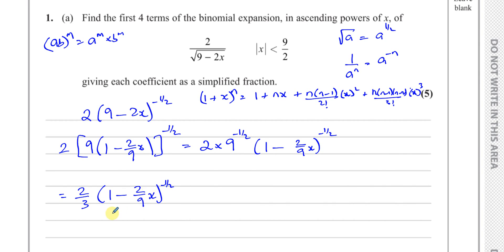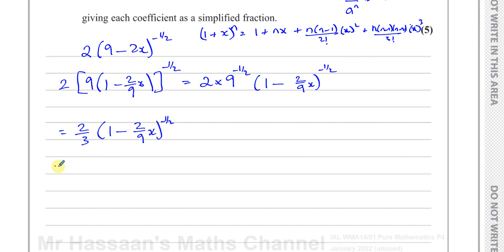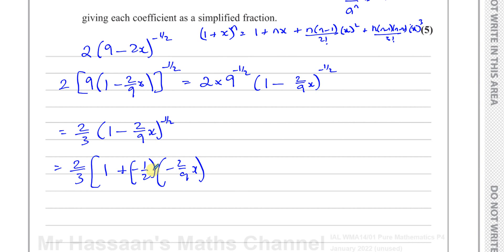Now this is in the correct form to use the formula. The x in the formula refers to whatever term is in that position, including its sign — so it's minus 2/9 × x. Using the formula, I have: 2 times [1 + n × (−2/9 x)...], where n is minus one half. Don't forget the factor of 2 outside. So the first two terms begin with 1 plus (−1/2)(−2/9 x), which is 1 plus (1/9)x.